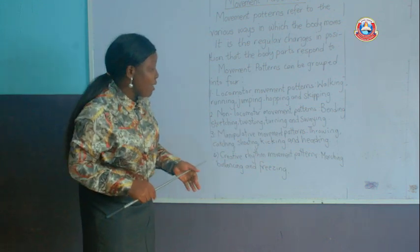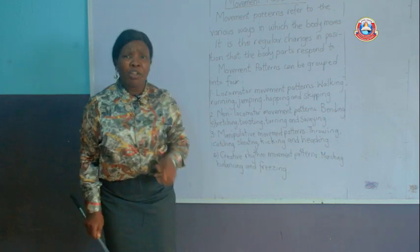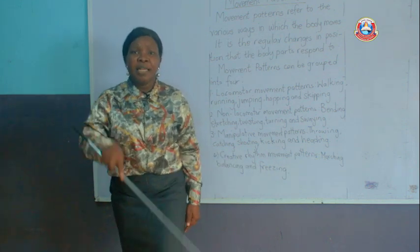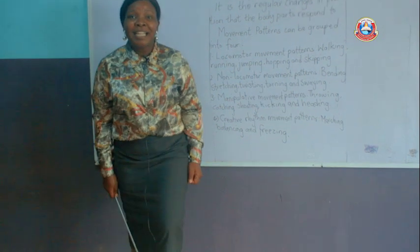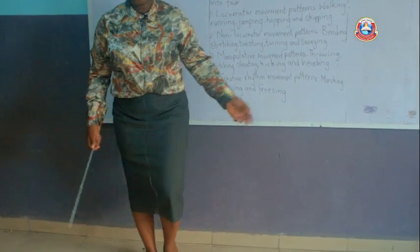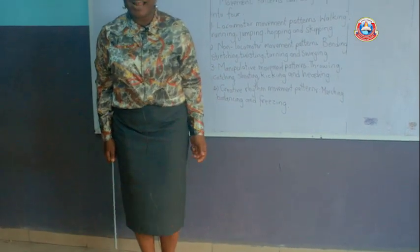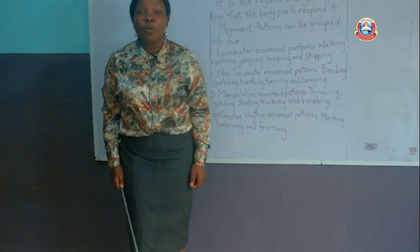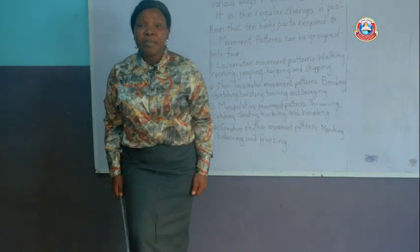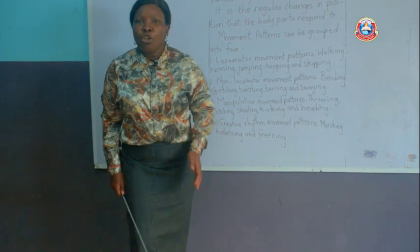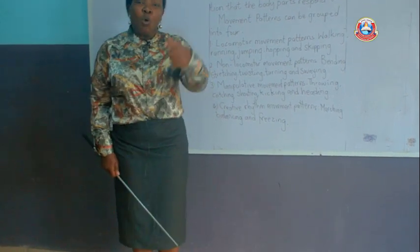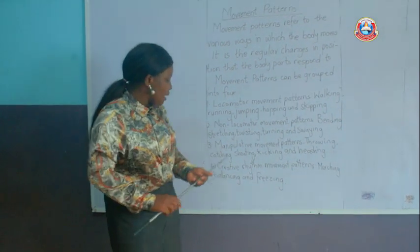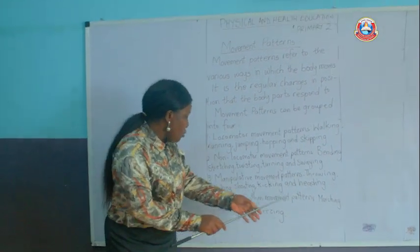An example of this kind of movement is marching. Remember how in marching we say left, left, left — when your commander says left, you will not raise your right leg, or you will be disqualified. You follow the instruction: left, right, left, right. So there is a pattern — that's why it is called creative rhythm movement.